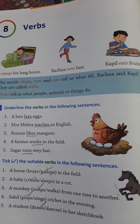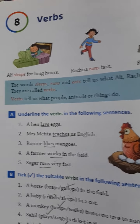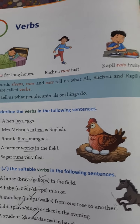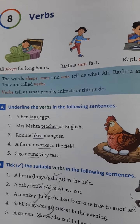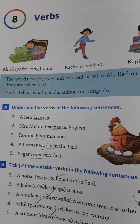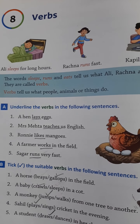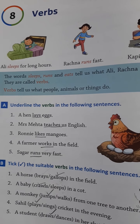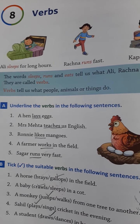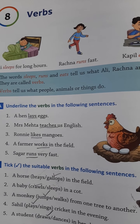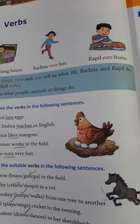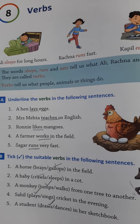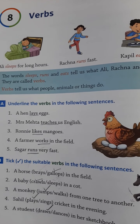The action doing words are called verbs. See the sentences given in your book: Ali sleeps for long hours. Rachna runs fast. Kapil eats fruit. In all these sentences, the person doing the action is highlighted with red color. Like Ali is sleeping on the bed, so the verb is sleeps. Rachna is running, so the verb is runs. Kapil is eating, so the verb is eats. So verbs are the words which tell you the action — what the person does.